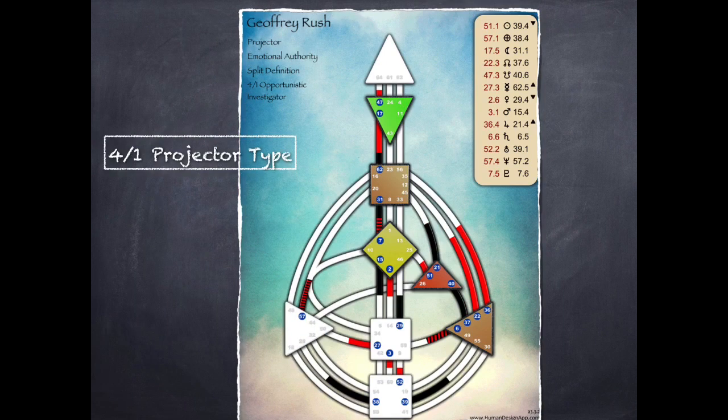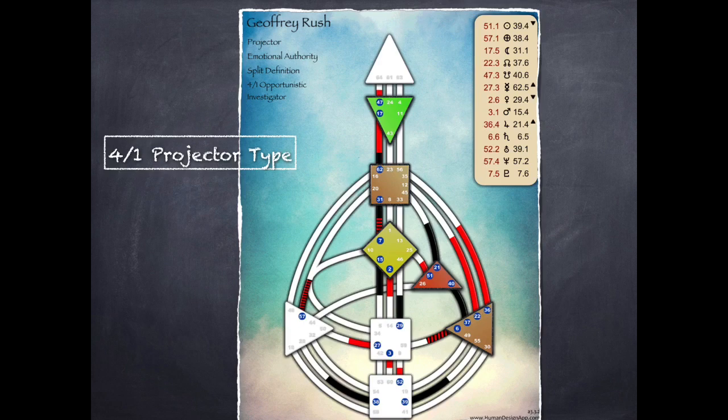When a projector carries a 4-1 profile, this is a person who is a conscious networker. Because line four is all about making connections and getting opportunities from their network, sometimes a projector may not wait for an invitation and may decide to make their own. When they're pushing for opportunities and invitations they haven't actually received, people may not like this and may not want to work with them. What's really important for a projector with 4-1 energy is to wait for recognition or an invitation into the network for the opportunity, and then they can investigate it and decide if that invitation is right for them.